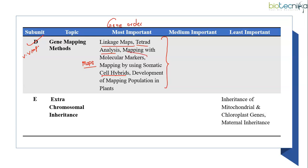Even molecular marker topic is important from this particular subunit. Molecular markers you study in other units as well. Like from unit 12, you study molecular markers in marker assisted selection topic. And in unit 13, you study about RFLP, AFLP, RAPD molecular markers and more. Therefore, you can expect combination based questions from this topic with other units like unit 13 as well.